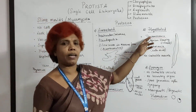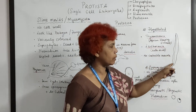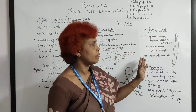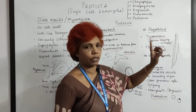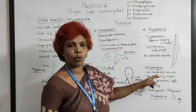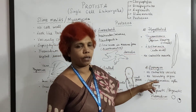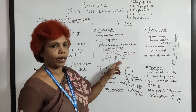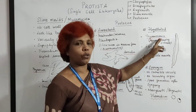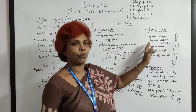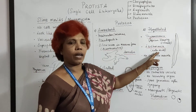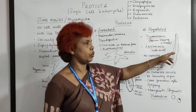Flagellated protozoans use a long flagella as their locomotory organ. Their internal structure is similar to amoeboids, but they do not have a contractile vacuole — flagellates and sporozoans are the two groups without a contractile vacuole. Examples include Trypanosoma, which causes African sleeping sickness, and Leishmania, which causes kala-azar. Both have flagella.